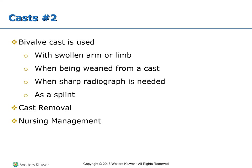Bivalve cast: Once a cast has been applied, it may be bivalved or cut in two. This may be necessary if the arm or leg swells, causing the rigid cast to compress the tissue or interfere with its blood supply. A bivalve cast may also be used for a client who is being weaned from a cast, when a sharp x-ray is needed, or as a splint for immobilizing painful joints when a client has arthritis.